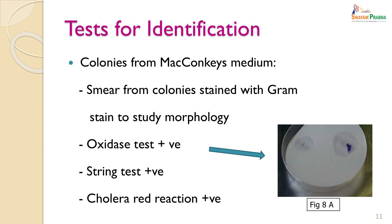The colonies were then used for identification to confirm the identity of the pathogen. A smear was made from colonies on McConkey's medium and stained with Gram stain again to confirm the morphology — that they were comma-shaped organisms. The oxidase test was done with this colony: it was oxidase test positive. It was string test positive and it was cholera red reaction positive.